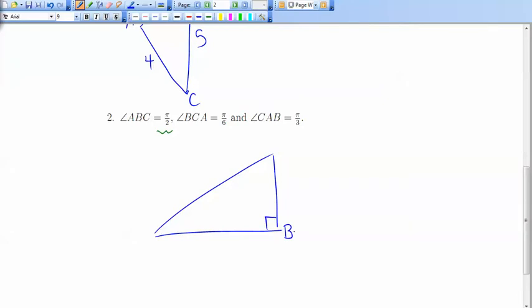And then I have an angle BCA. So at C we have a small angle π/6, that's 30 degrees. And at vertex A we have an angle of π/3, which is 60 degrees if you convert it. But there's my triangle there. And we'd call this a right angle triangle since it has a right angle.